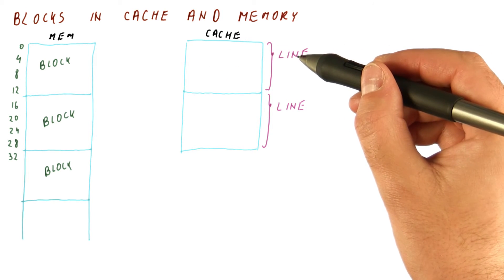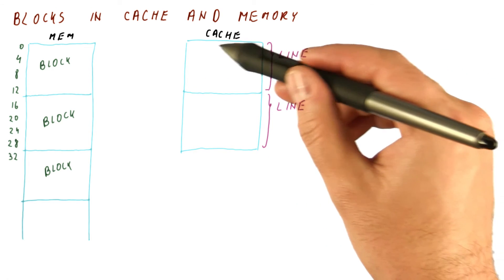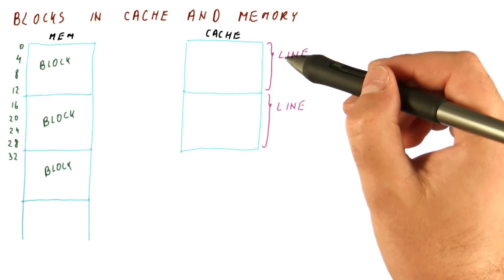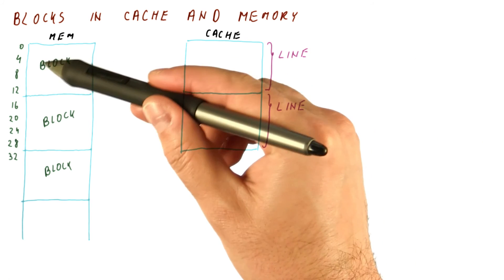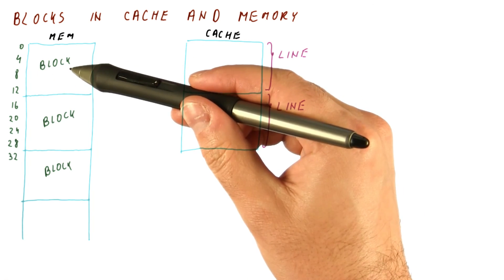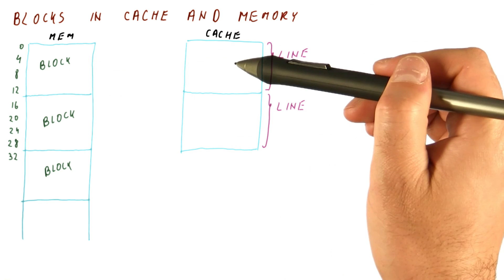So when we want to make a precise distinction between the space in the cache where we can put a block and the actual memory content we put there, the space in the cache is called a line, and the stuff we put there is called a block. The line size and the block size are the same. So a line is effectively a slot where a block might fit.